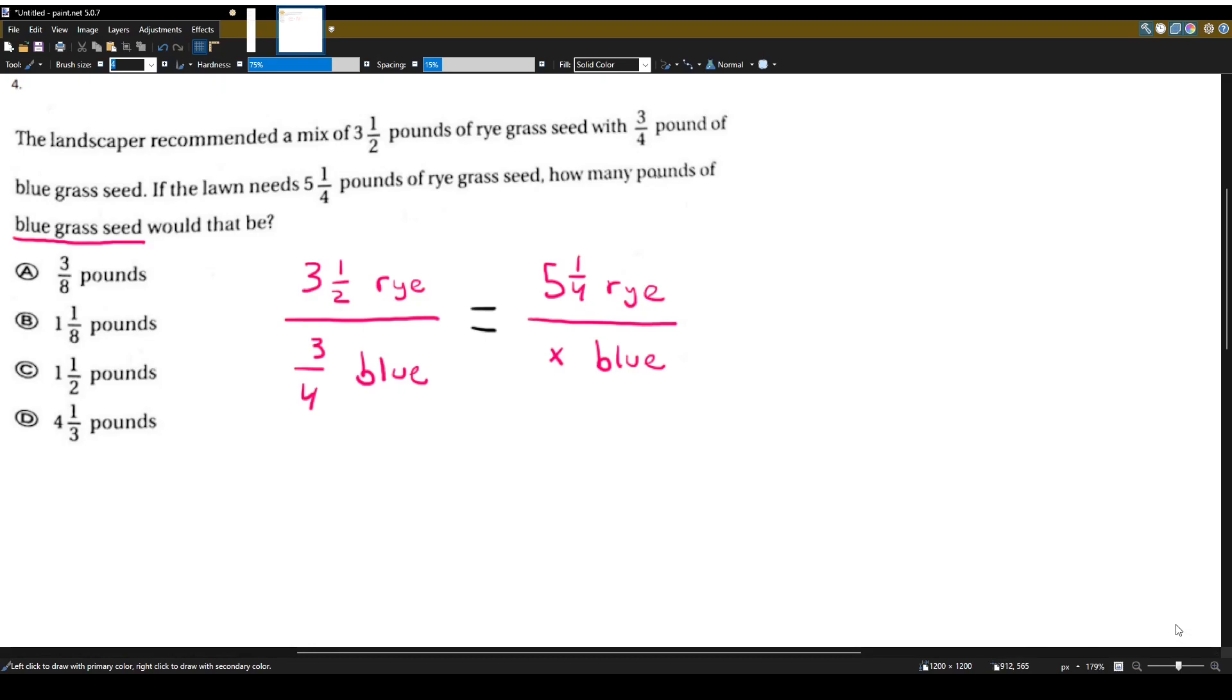So now that we have a proportion set up, we can do what's called cross multiplying, where we'll multiply these two numbers and then we'll multiply these two numbers. As you see, they're diagonals.